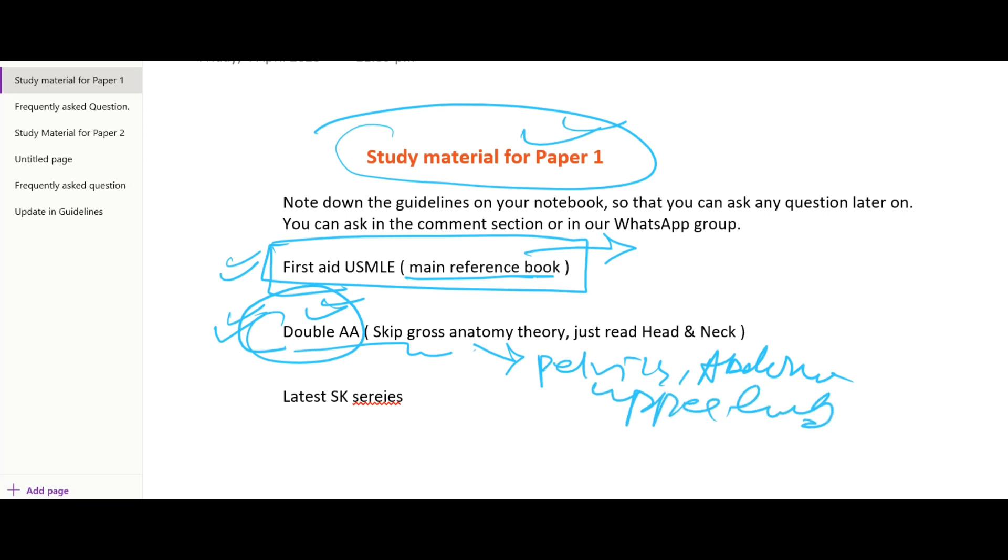And the second alternative of AA is Rafiurla. You can also study Rafiurla if you want. In Rafiurla, there is also system-wise theory given from the past MCQs.